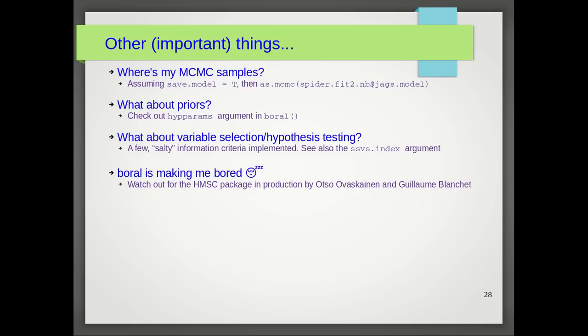A couple of final things. If you want to extract your MCMC samples, then when you fit the model, please set save.model equals true, and then the MCMC samples will be available or can be quite straightforwardly extracted. Regarding priors, BORAL uses uninformative priors, so normal distribution with mean zero and very large variances. This can be changed using the hyperparams argument.